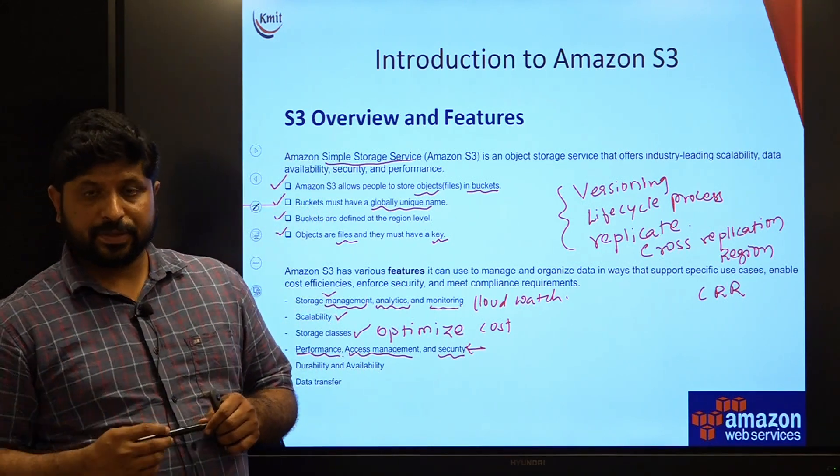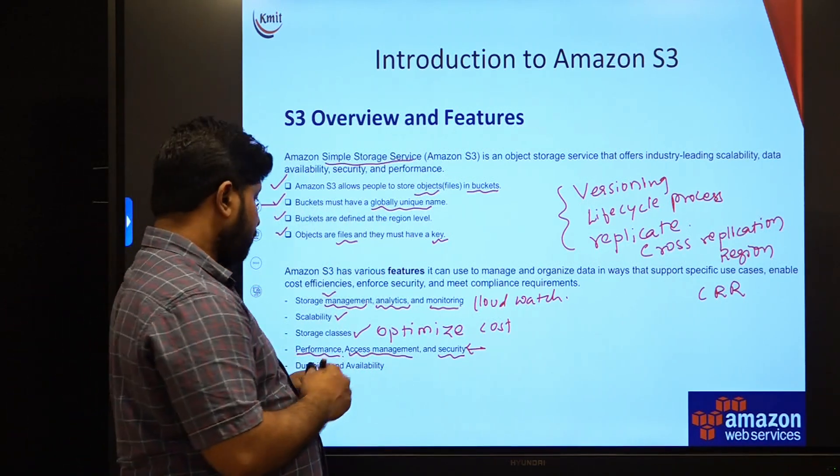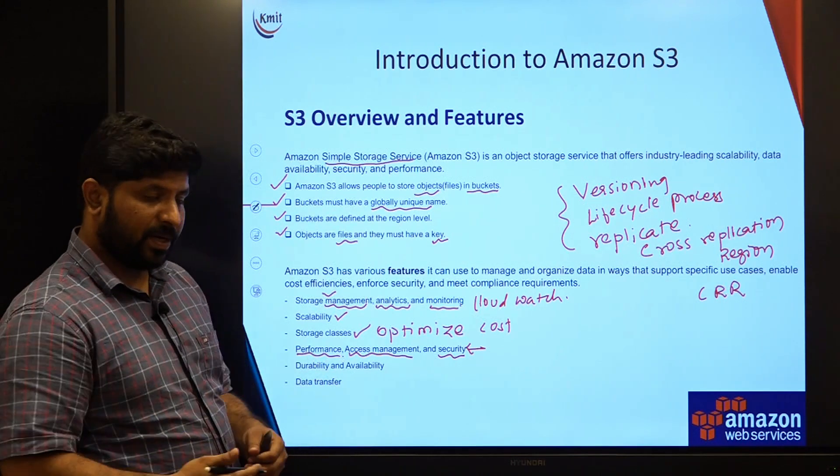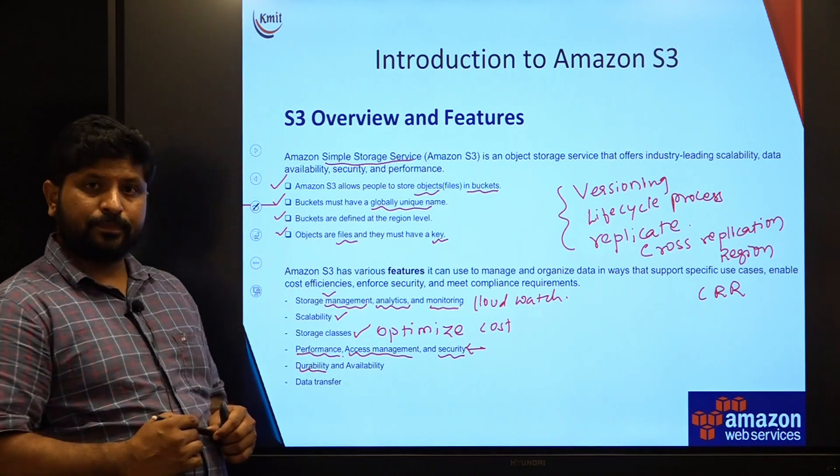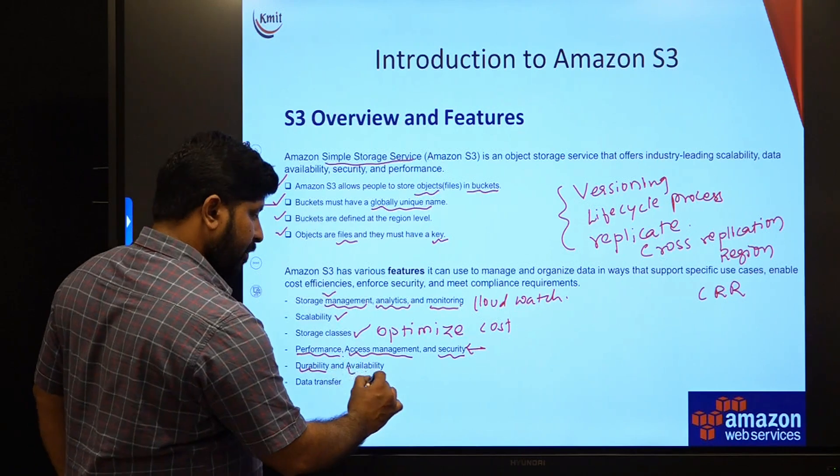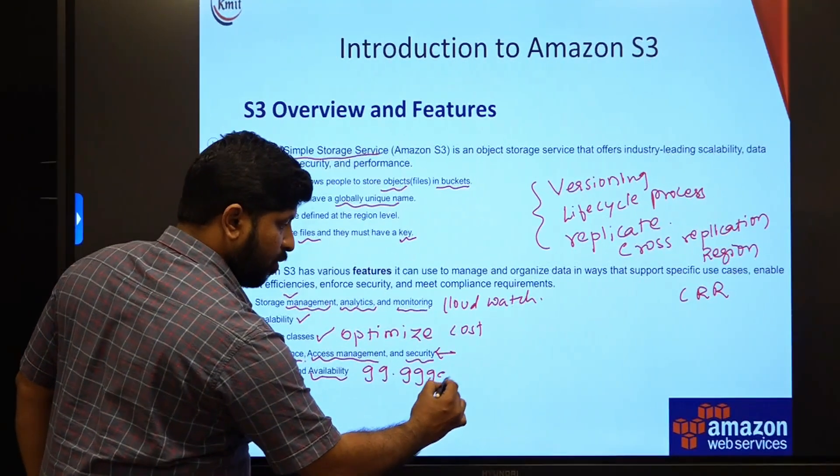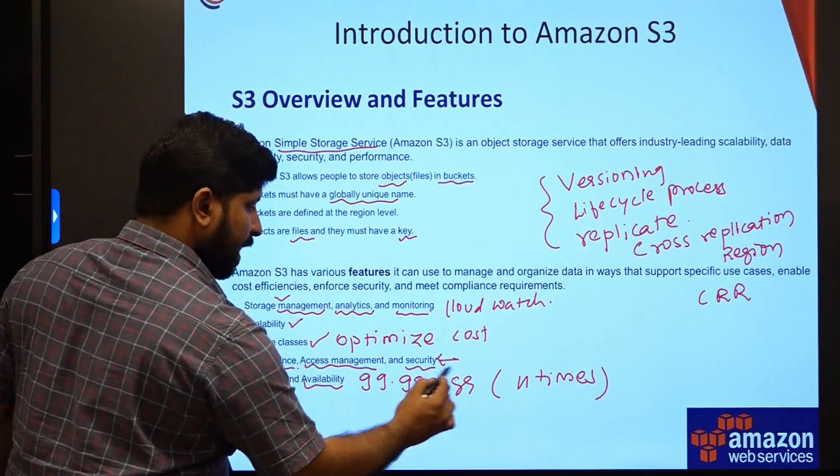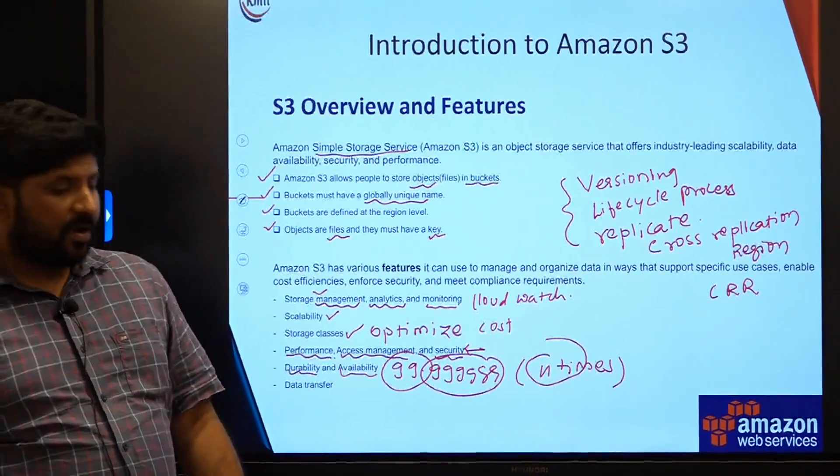And it provides various security parameters also: data encryption or ACL permissions, which are access management. The data can be encrypted. It is based on the choice. If you are encrypting the data, they are going to charge you. And it is highly durable. Durable means the data is very much available. They quote that the data is available for 99.9999, 11 nines. Amazon quotes that these 9s are going to be 11 times, 99.99% availability.